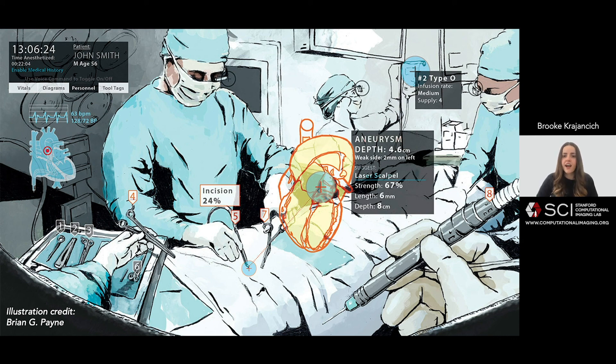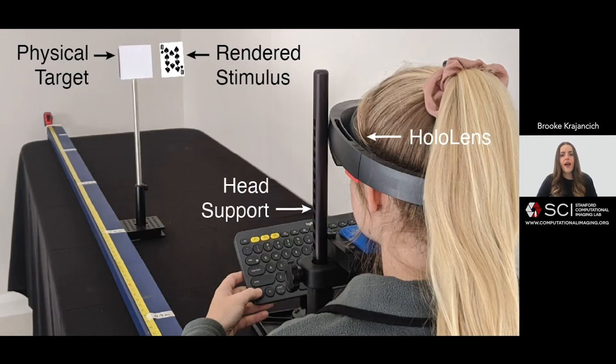And while judging shape in VR requires higher level spatial reasoning, we expected that the distortion would be even easier to detect in tasks where the relative displacement of two surfaces alone is a sufficient cue.